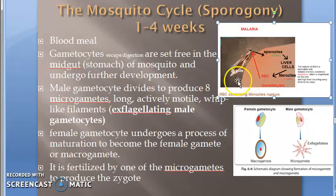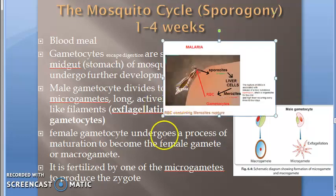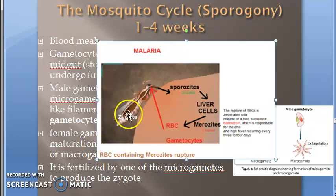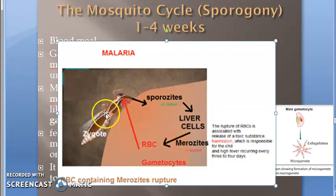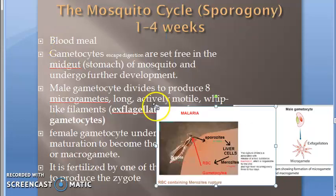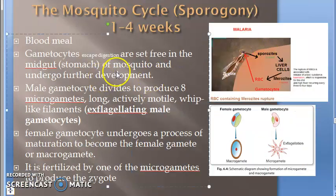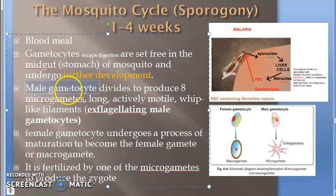Welcome into the stomach of the mosquito. We are currently in the stomach of this mosquito. It has taken up a blood meal and all the gametocytes and other things have entered. The gametocytes are set free in the midgut or the stomach, and in the stomach they undergo further development.